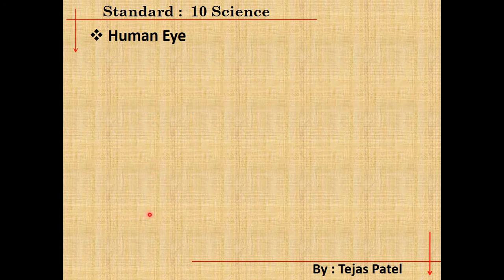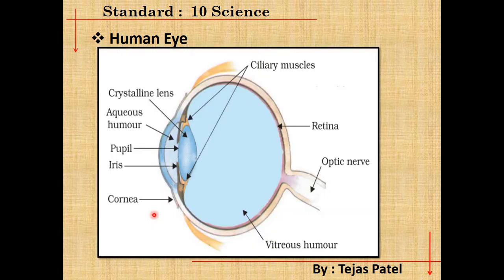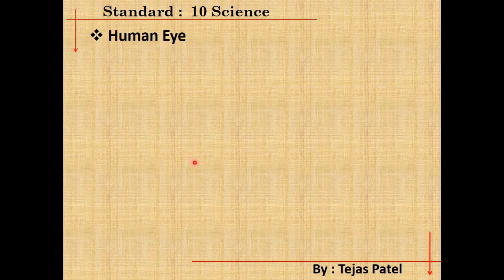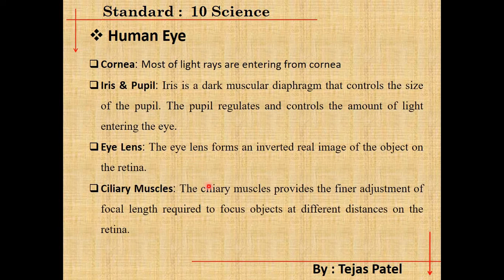Next are the ciliary muscles. As shown in the figure, they are on the top and bottom parts of the crystalline lens. Their function is to provide fine adjustment of the focal length required to focus objects at different distances onto the retina. Whenever the object is far or near, the ciliary muscles adjust the focal length of the eye lens accordingly.